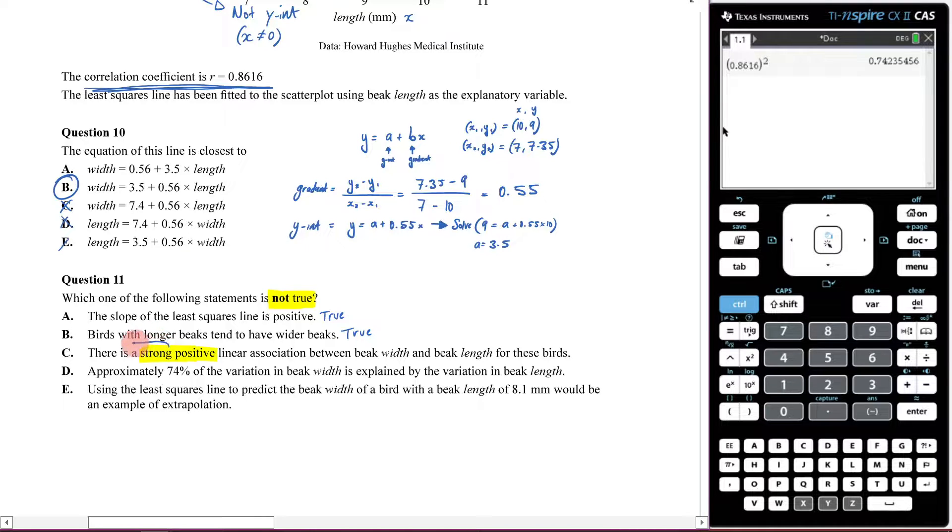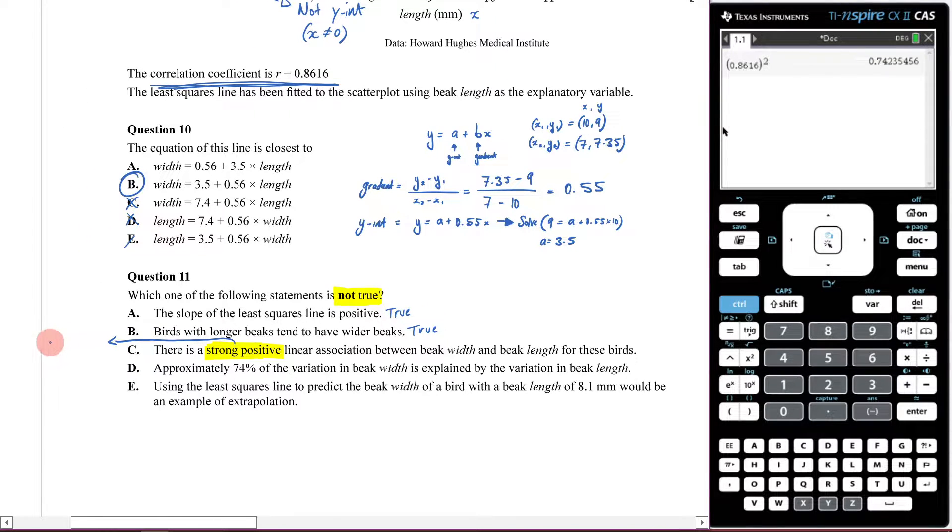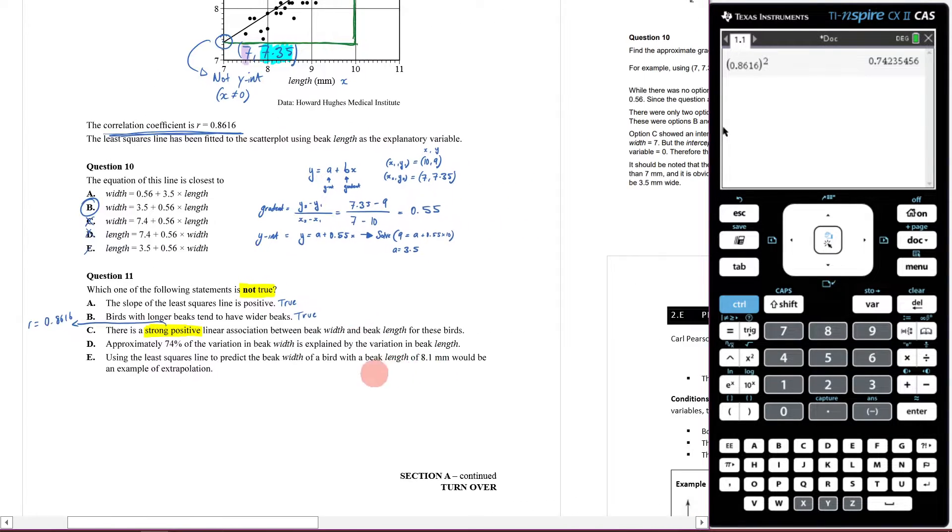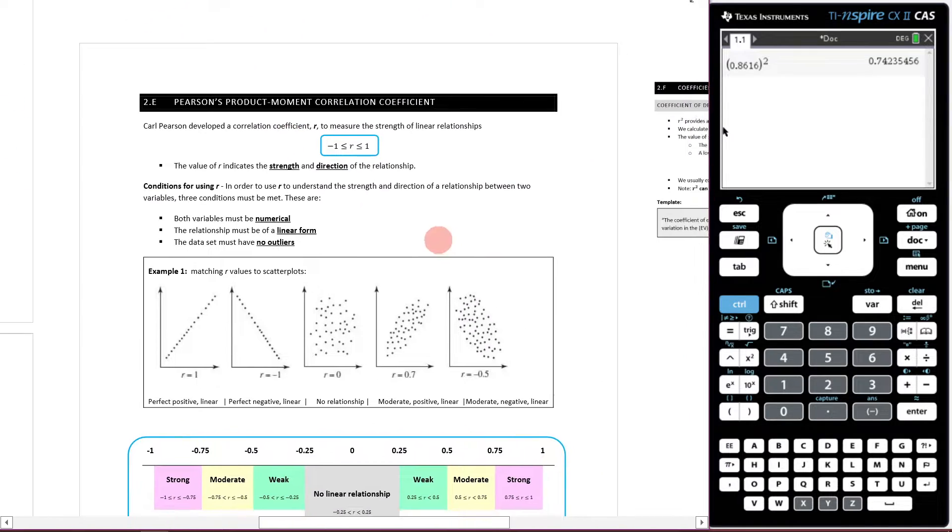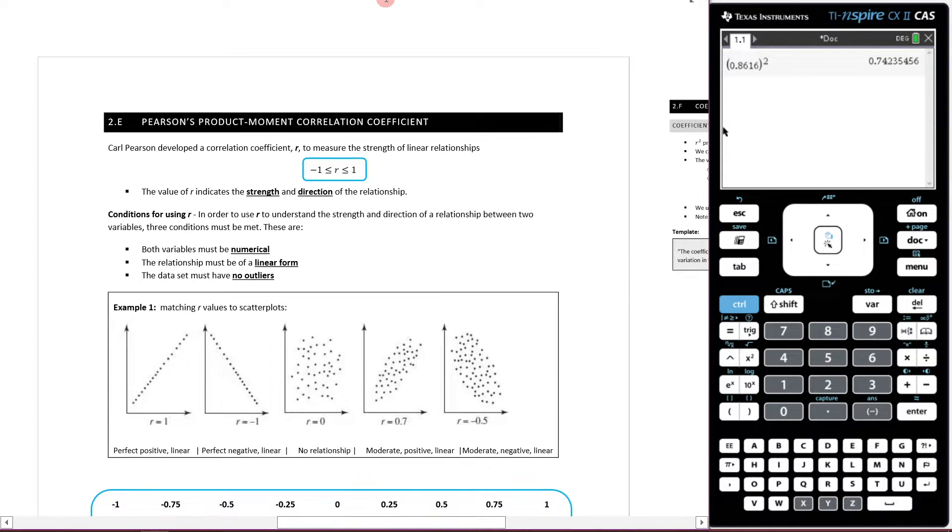So I would say r equals 0.8616. Now what is your correlation coefficient? Here are the notes. The correlation coefficient r is between negative one and one, and it tells you the strength and the direction.